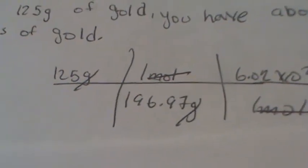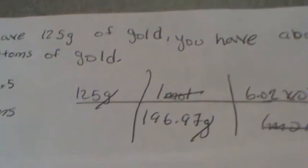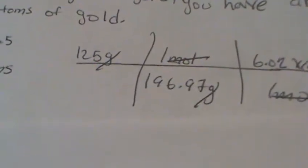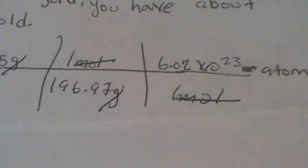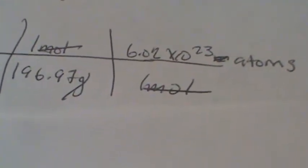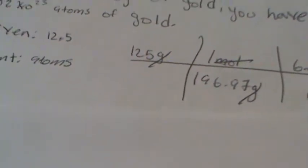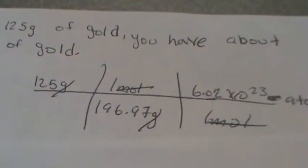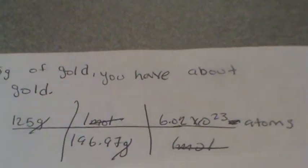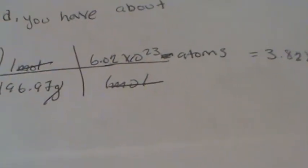We put that over one mole, and our total atomic mass for gold will be 196.97 grams. Our next one will be 6.02 times 10 to the 23rd atoms over one mole. So we're going from grams to moles, and from moles to atoms.